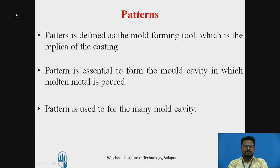What is meant by Pattern? A pattern is defined as the mold-forming tool which is the replica of the casting. It is also defined as the replica of a finished product or finished component. It is essential to form a mold cavity in which molten metal is poured. A pattern is used to form many mold cavities and hence castings. A pattern is required even if only one object has to be cast. Pattern is slightly larger in size compared to the casting, because we have to provide allowances such as shrinkage allowance, machining allowance, draft allowance, etc.